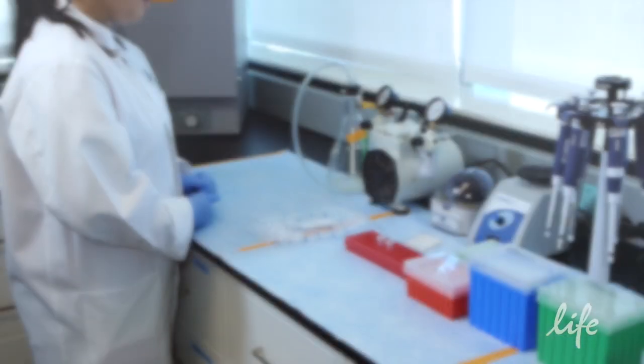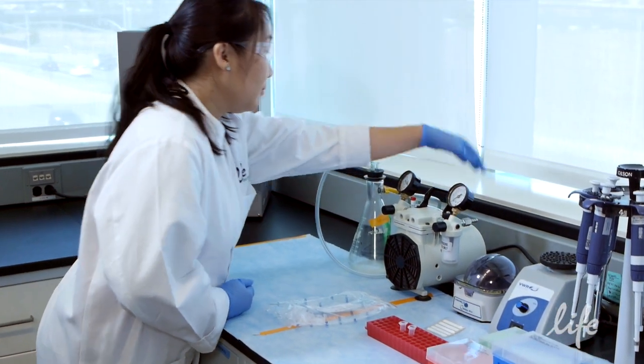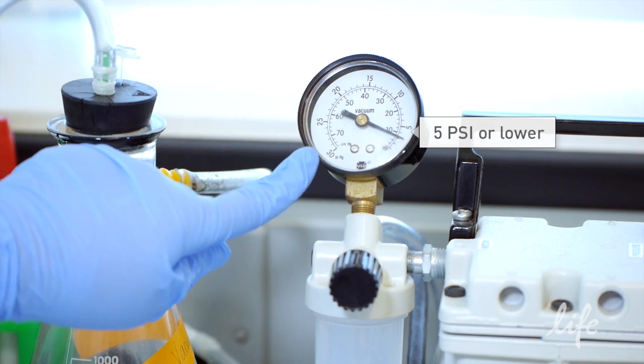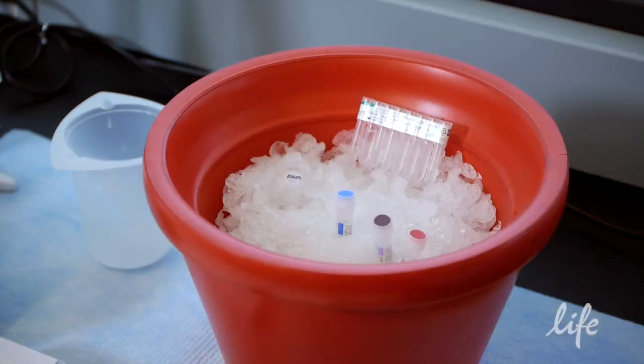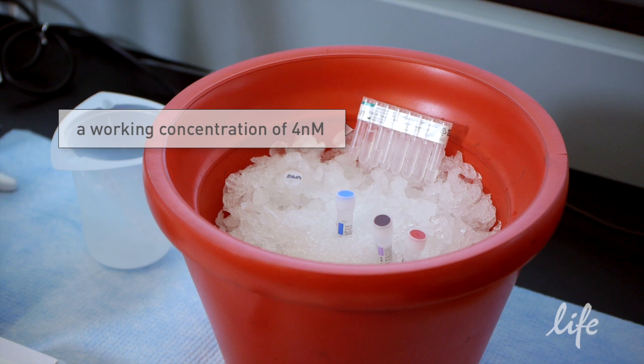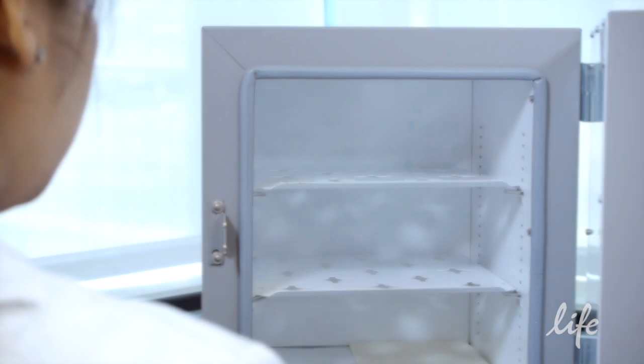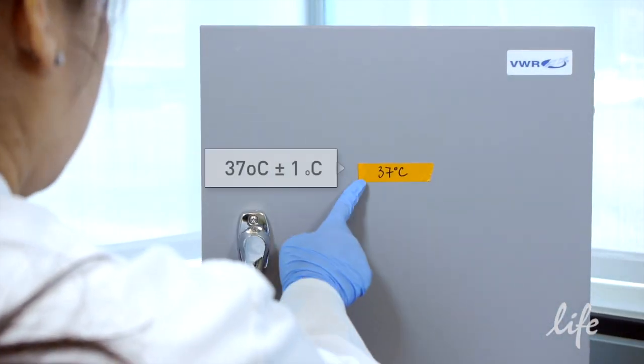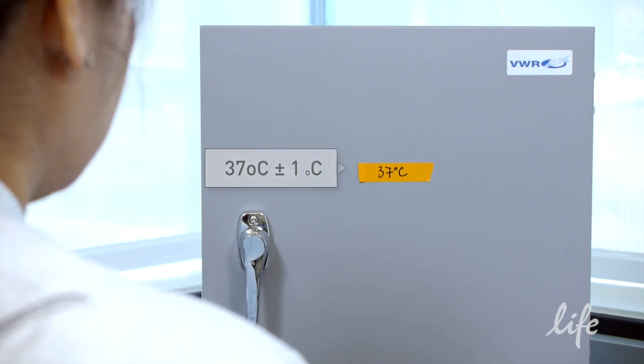Keep in mind a few important considerations before performing the protocol. The vacuum source should be regulated to 5 psi or lower. The Wildfire Modified Library should be at a working concentration of 4 nanomolar. And make sure the internal temperature of the incubator is at 37 degrees Celsius, plus or minus 1 degree.